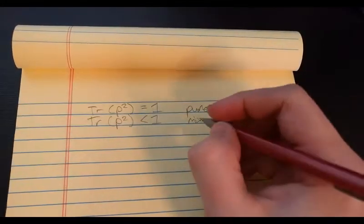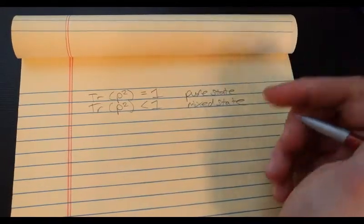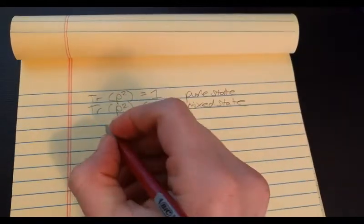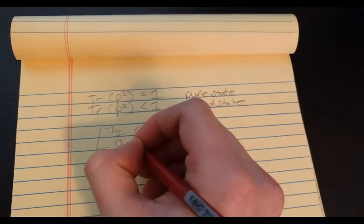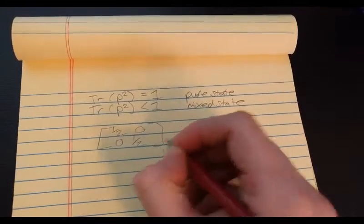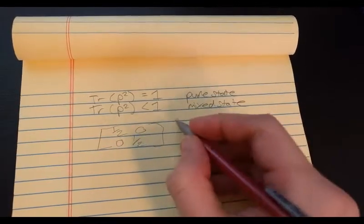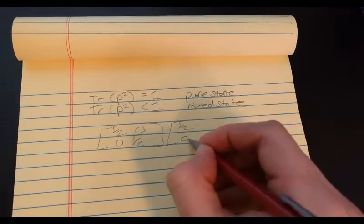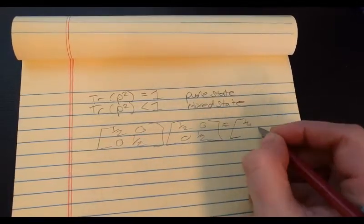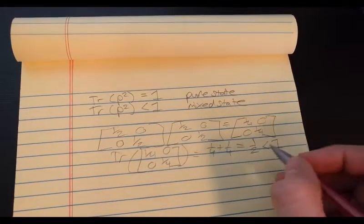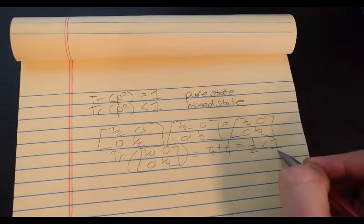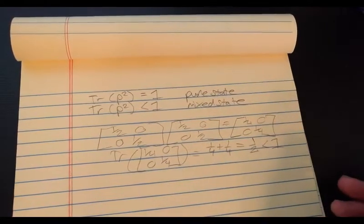So, for example, in the last video, I said we can represent unpolarized light by this density matrix. Now, if we square this density matrix, let's see what we get. So, we get a half, which is less than one, so therefore we know we have a mixed state.